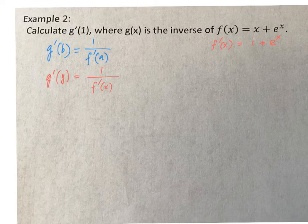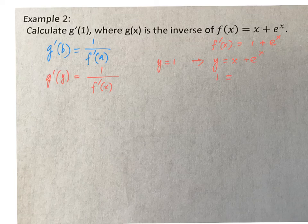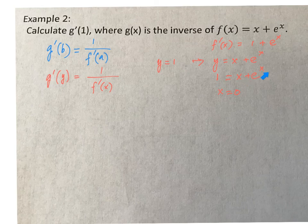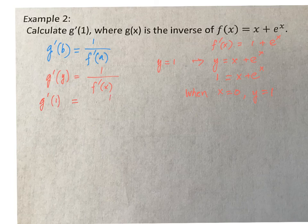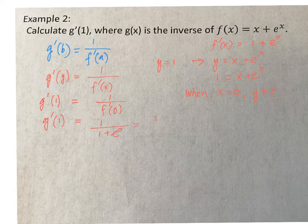Since y equals f of x, which is x plus e to the x, we substitute 1 for y: 1 equals x plus e to the x, so x must be 0. Substituting 0 for x: 0 plus e to the 0 equals 1, confirming when x equals 0, y equals 1. Substituting into our formula: g prime of 1 equals 1 over f prime of 0, equals 1 over 1 plus e to the 0, which is 1 over 1 plus 1, equals 1 over 2. And that is our answer.